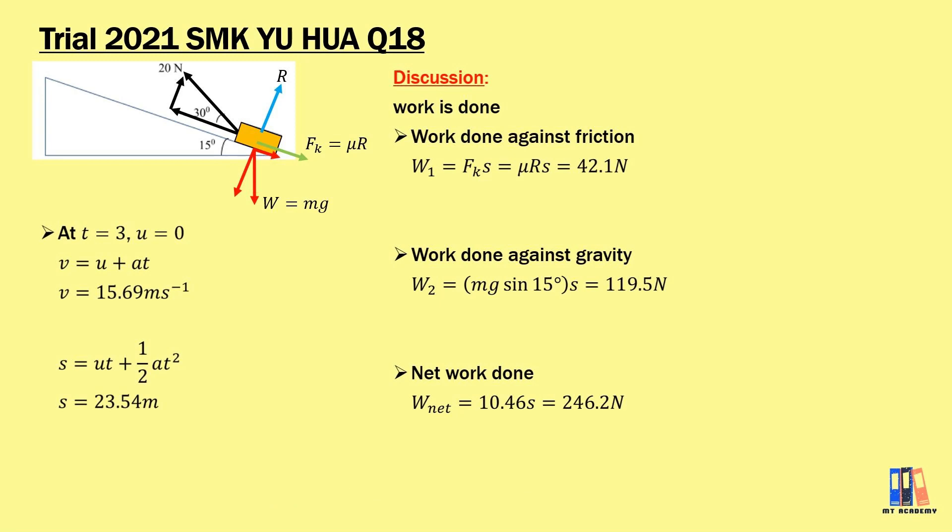Based on work energy theorem, the work done will cause increase in mechanical energy. The first work done which is against the friction will be converted to heat energy. You can try to rub your own hand and you may feel some warmness which reflects there is heat energy when the surface is rubbing.